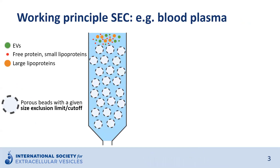To explain the principle of SEC, let's take a look at what happens when you load a plasma sample on top of a SEC column. The plasma sample contains EVs of different sizes, but also a lot of soluble proteins and lipoproteins. The SEC column itself is a stack of polymer beads that have pores of a certain size, called the size exclusion limit, or the cutoff value of the column.